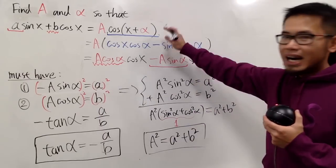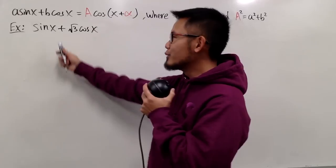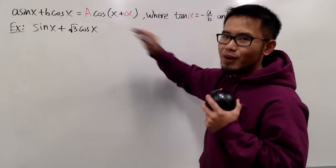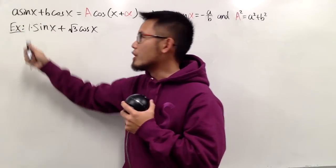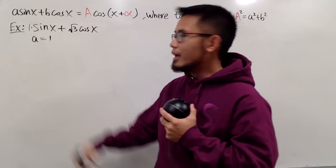Let me show you guys an example on how this is going to work. Now I will show you how to combine sin x plus square root of 3 cos x into a cosine function. So first of all, you see, this is the same as 1 times sin x.